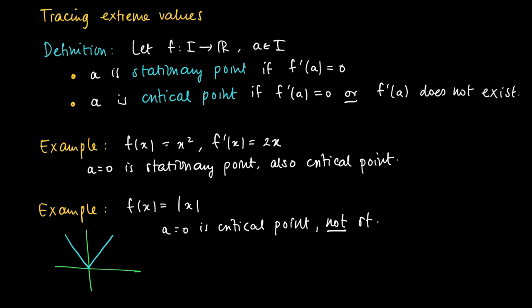And a equals 0 is not stationary. So being stationary is a stronger property than being critical.